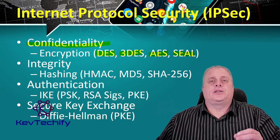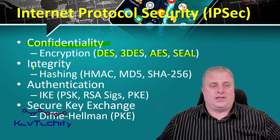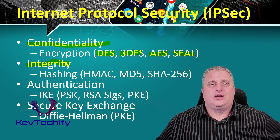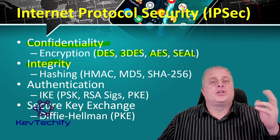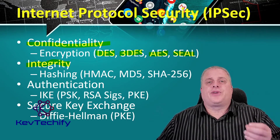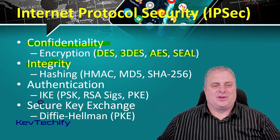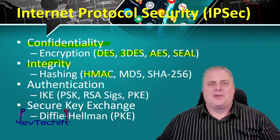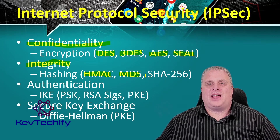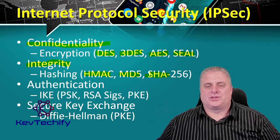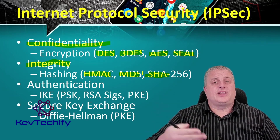Whereas confidentiality ensures that information is not seen, integrity ensures that the information was not altered or changed. This is provided through hashed message authentication code, also known as HMAC, message digest MD5, or the Secure Hash Algorithm, also known as SHA. SHA-256 is the standard that's acceptable today.